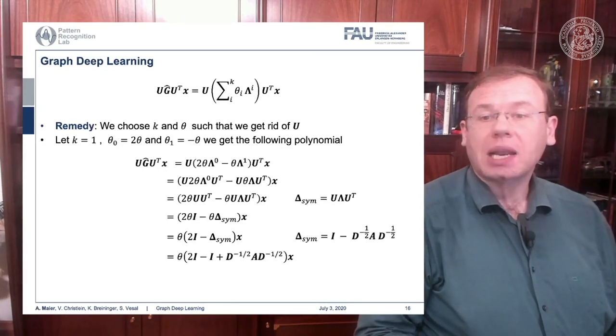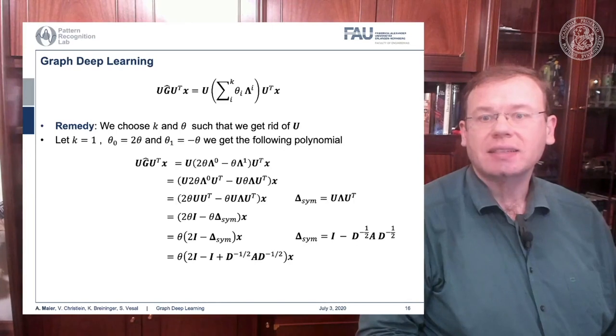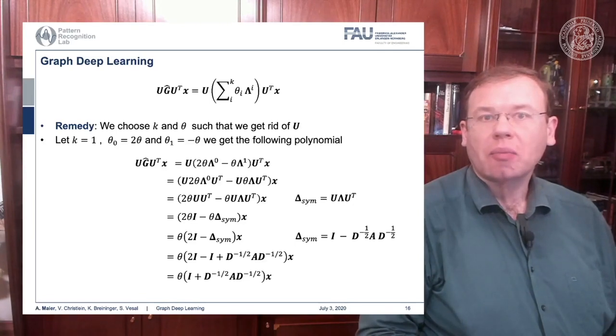If we plug in the definition of the symmetric version associated to the original adjacency matrix and the degree matrix, we can see that one of the identity matrices cancels out and we finally get identity plus D to the power of minus 0.5 times A times D to the power of minus 0.5. Remember D is a diagonal matrix, so we can easily invert the elements on the diagonal and take element-wise the square root.